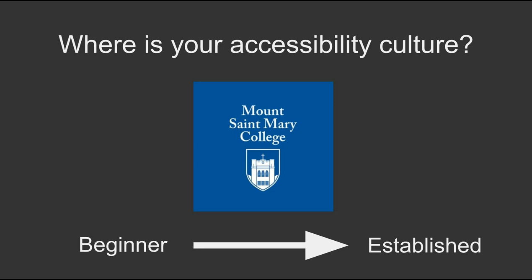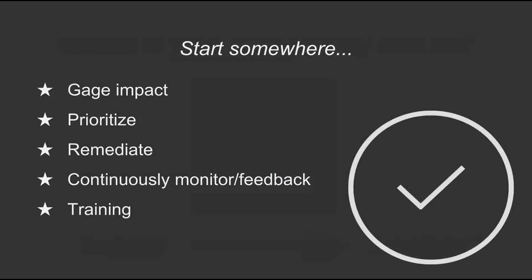I ask you to ask yourself: where are you? Are you at a more beginner level, or more established? What do you know about what your direct area is doing to enhance accessibility? What do you know about what your institution is doing? Whether for an individual course, a department website, or other university pages, you need to identify barriers, assess impact, make a plan for new content, have a process in place to remediate older content, and provide training.